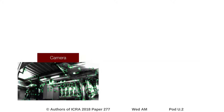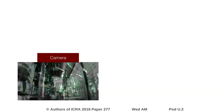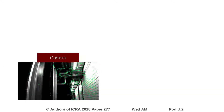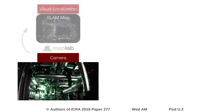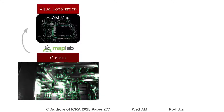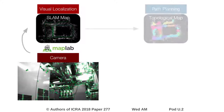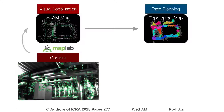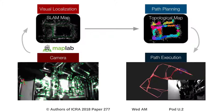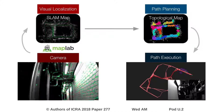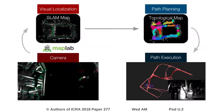Finally, we tested Topomap on a real robot. Using the camera images, we could perform global visual localization in a SLAM map. We created a topological map from the SLAM map, which we could then use for path planning. This demonstrates the usefulness of Topomap for real-world robotic applications.